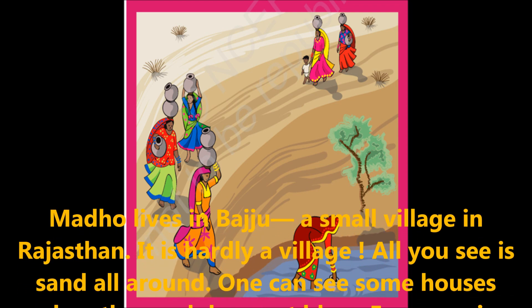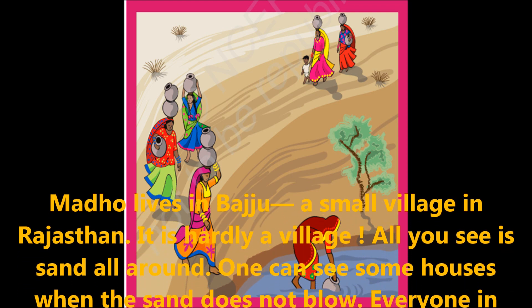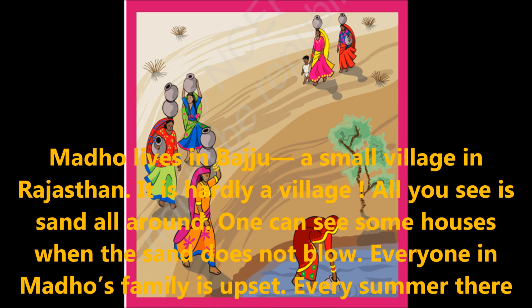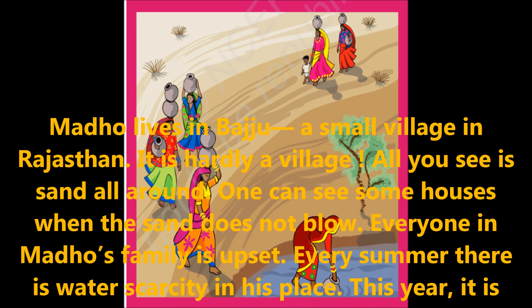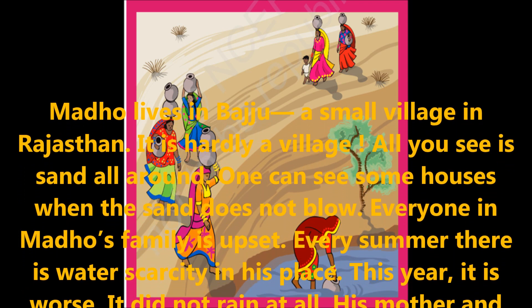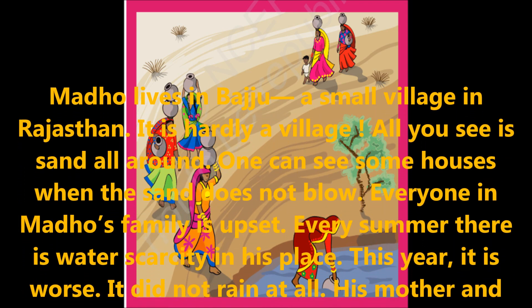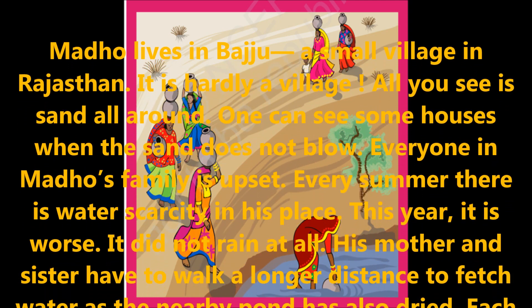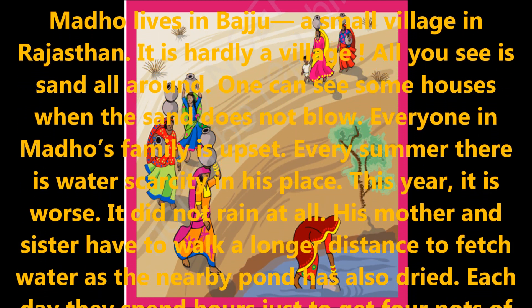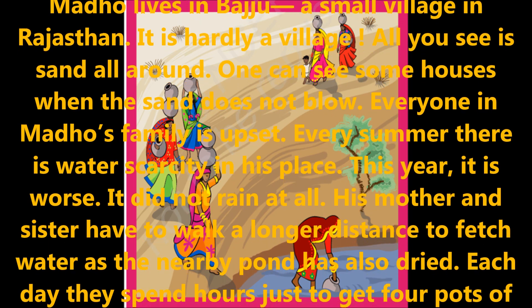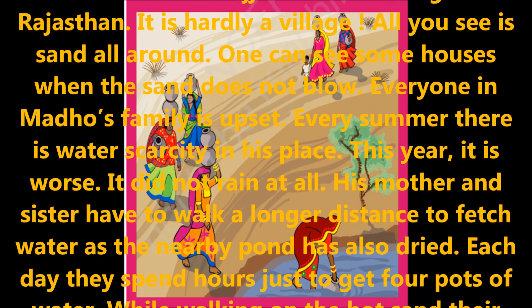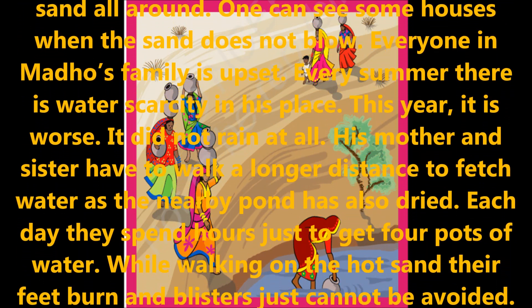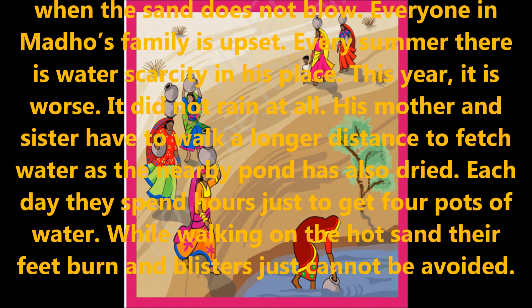Madhu lives in Baju, a small village in Rajasthan. All you see is sand around the village. One can see some houses when the sand does not blow. Everyone in Madhu's family is upset. Every summer there is water scarcity in his place. This year it is very bad — it did not rain at all.